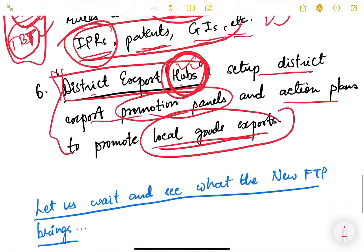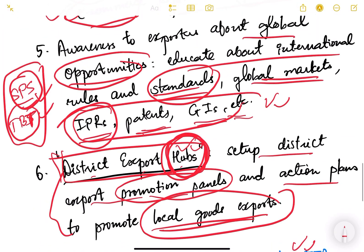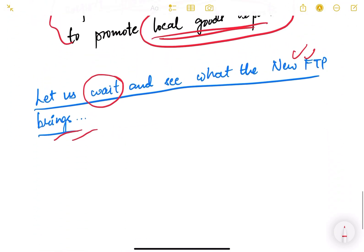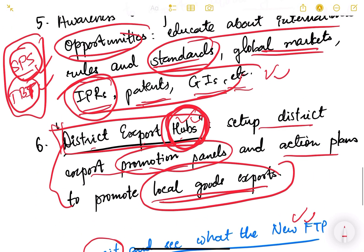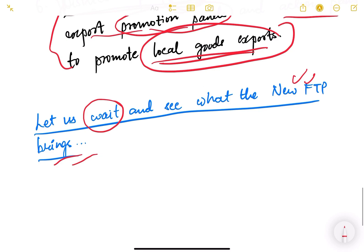These are briefly the things we can expect, but we have to wait and see what the new foreign trade policy actually brings. Maybe it will incorporate some of these points, maybe there will be new points, maybe there will be some issues again — we don't know. But these are the things the government needs to do so that India remains globally competitive and our foreign trade increases. With this we end the topic of foreign trade policy. We'll continue International Economic Policy in the next video. If you have any doubts, ask in the comment section — thank you.